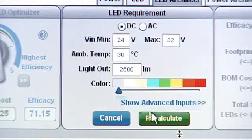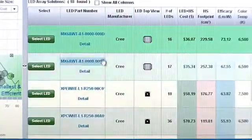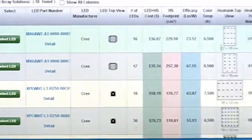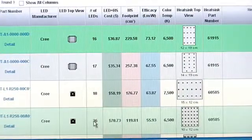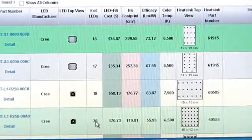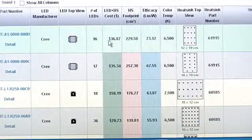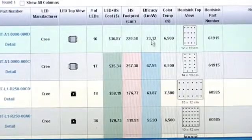After you click the Recalculate button, you will see the possible LED array solutions, each offering a different LED part number and manufacturer, and also the required heat sink. It shows you the number of LEDs required. There can be quite a range depending on the output of the various LEDs. And you can see here it gives you the cost of the LED plus the heat sink, the heat sink footprint, and the efficacy of that array.